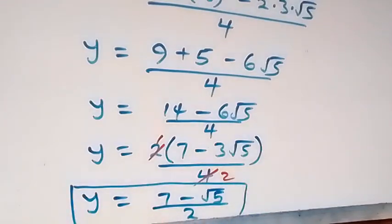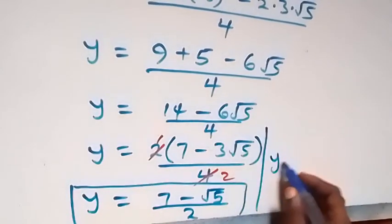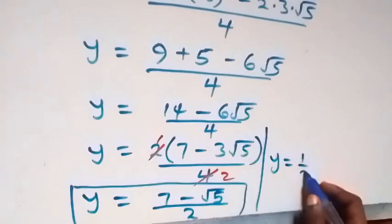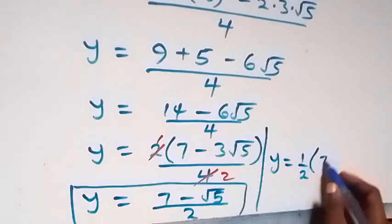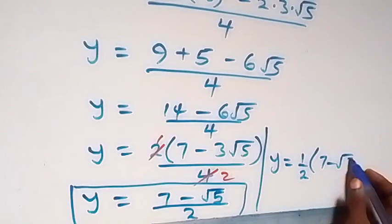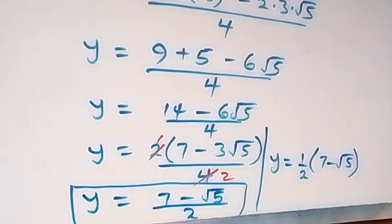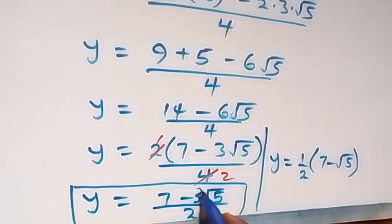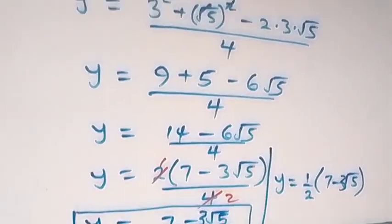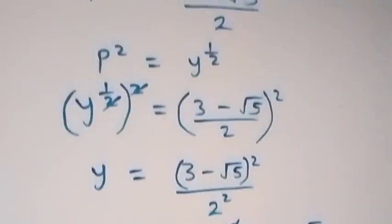The final answer is y equals to 7 minus root 5 — correction: this is 3 root 5, and 3 root 5. Thank you for joining us. Subscribe to my channel and turn on the notification bell. Share this video and give it a thumbs up.